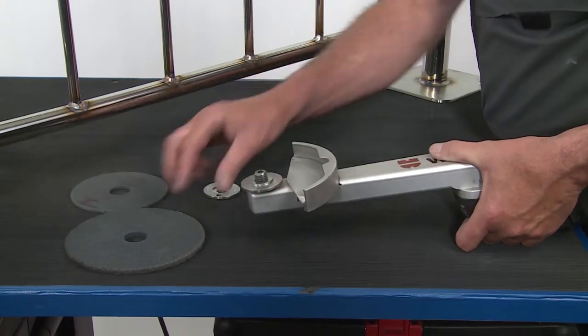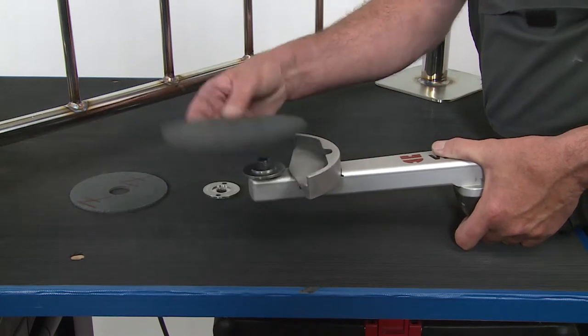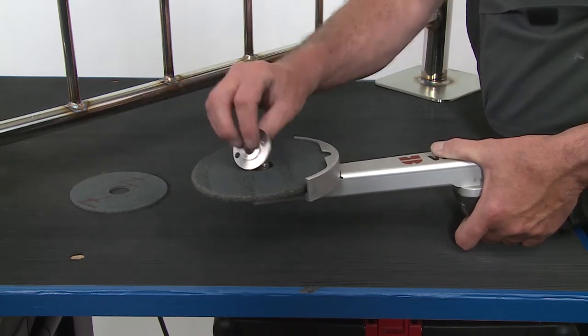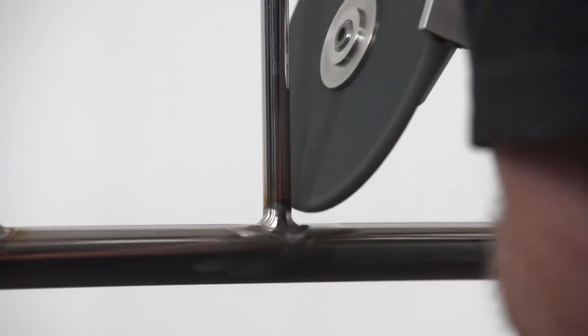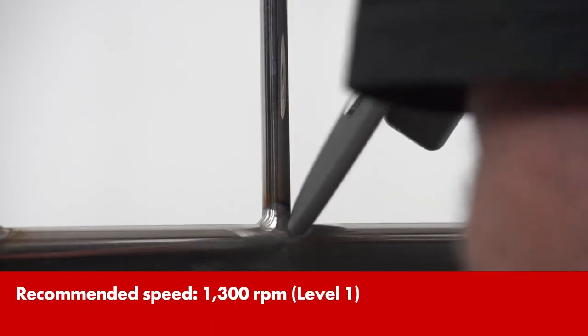After you have removed the weld seam, change to a softer disc with a hardness grade of 5 and 6 mm. Even out all transitions precisely with the softer disc.